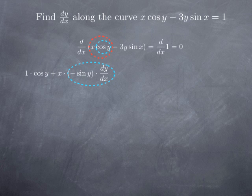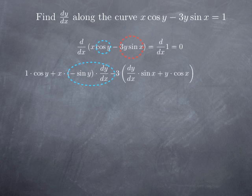Applying the chain rule to cosine y: derivative of the outside function cosine is negative sine, evaluated at y, multiplied by the derivative of y, which is dy over dx. To differentiate 3y sine(x), this is a product of y and sine x, so we apply the product rule again. We get: derivative of the first factor dy/dx multiplied by sine x, plus the first factor y multiplied by the derivative of sine x, which is cosine x.